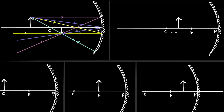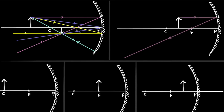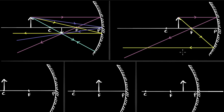Now let's go to the case where the object is between C and F. Where will the image be? The first ray I'll draw is parallel to the principal axis — this will go through the focus. The second ray I'll draw through the focus and this will go parallel to the principal axis. And as a result, I'll get a large inverted real image beyond C.